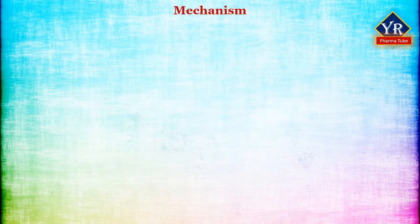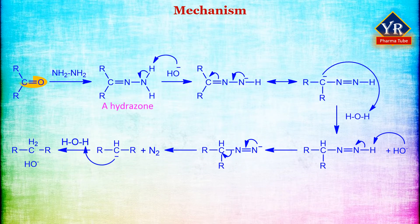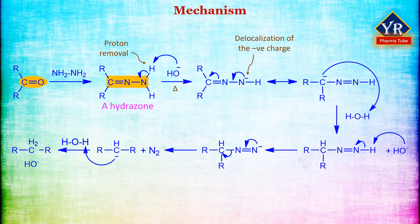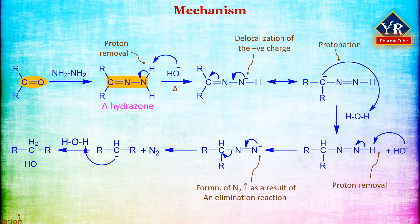Mechanism of Wolf-Kishner reaction: The ketone first reacts with hydrazine to form a hydrazone. Hydroxide ion removes a proton from the amino group of the hydrazone — the reaction requires heat because this proton is only weakly acidic. The negative charge can be delocalized onto carbon, which removes a proton from a water molecule. The last two steps are repeated to form the deoxygenated product and nitrogen gas.